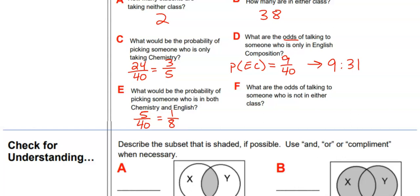The odds of talking to someone not in either class: probability is 2 out of 40, or 1 out of 20. Converting to odds, that's 1 to 19. Go ahead and do the check for understanding, or start the practice for 14.3.